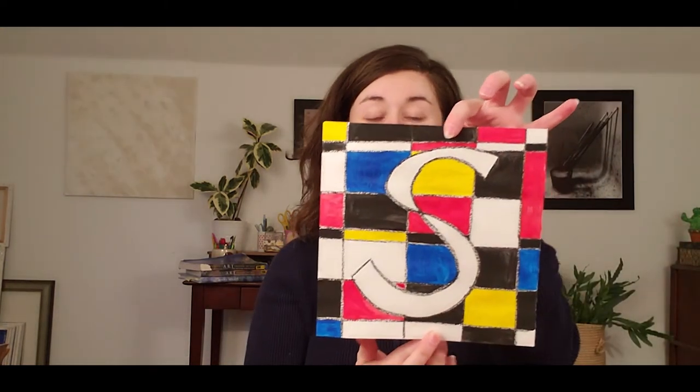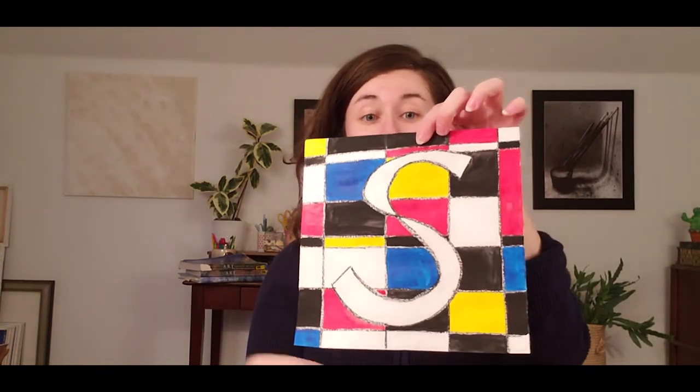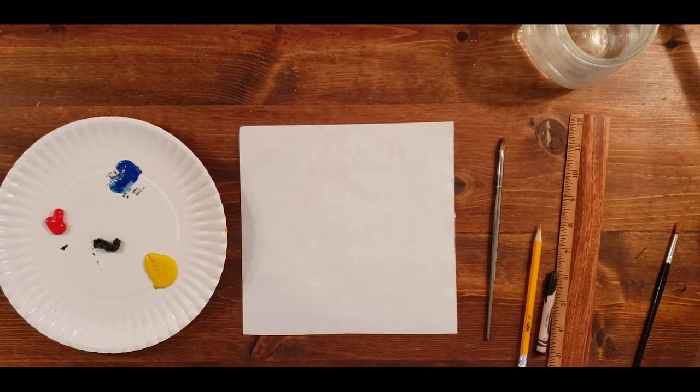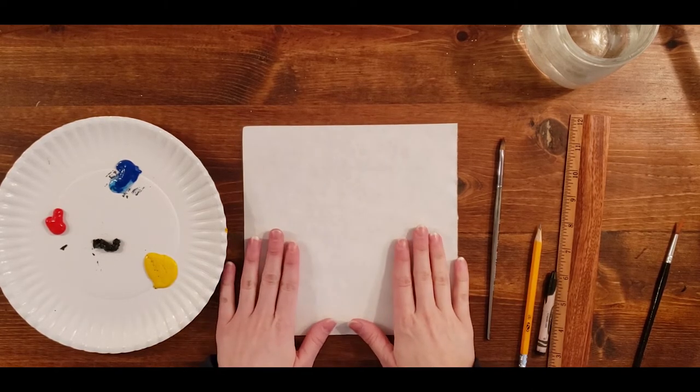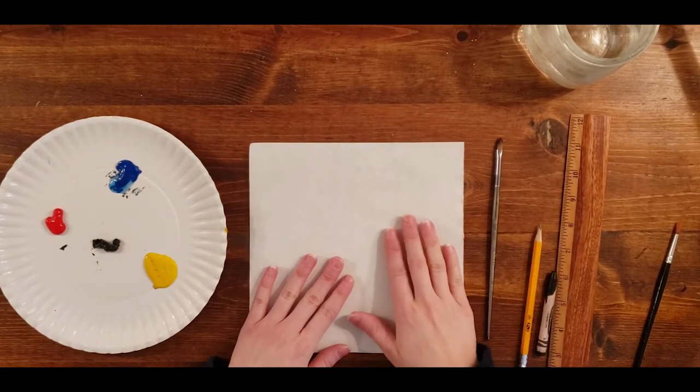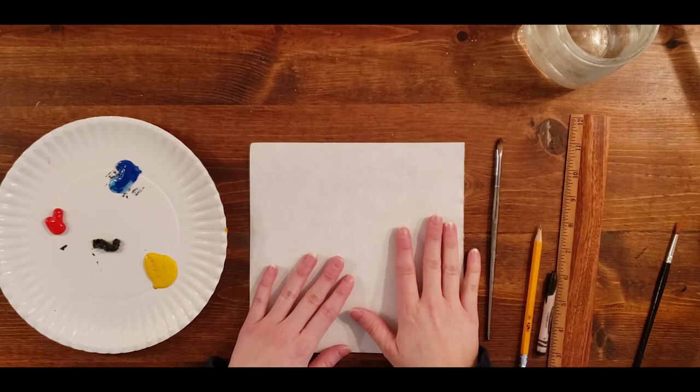On to today's project, we are going to be making our own version of Mondrian, but we are going to focus on the letter of our first name. For today's project you are going to need paper, a pencil, either a marker or crayon, paint, a rag or paper towels, a paintbrush, and a cup to wash your brush with water. These are the materials that I have. I have just another piece of plain white paper.